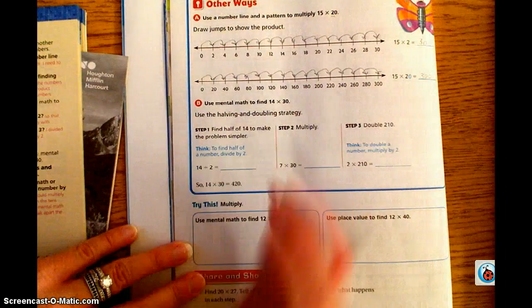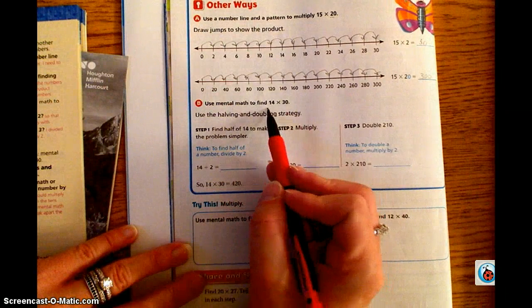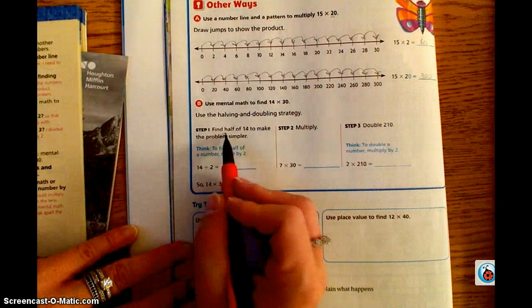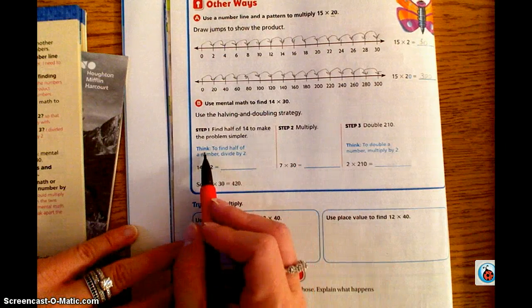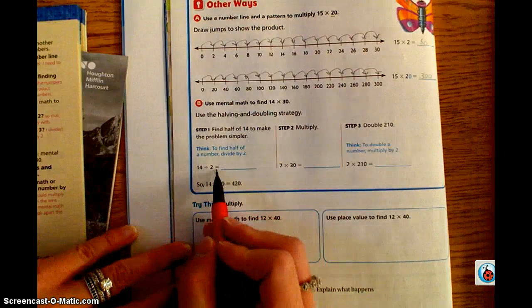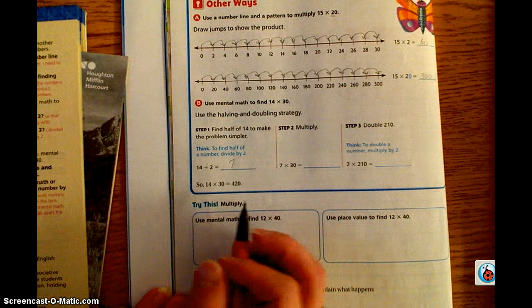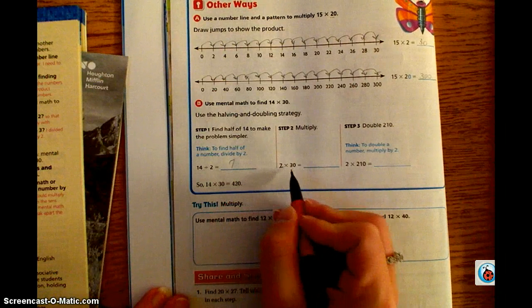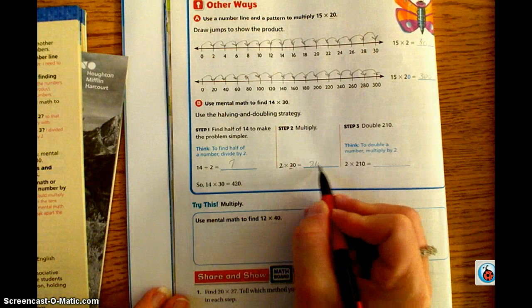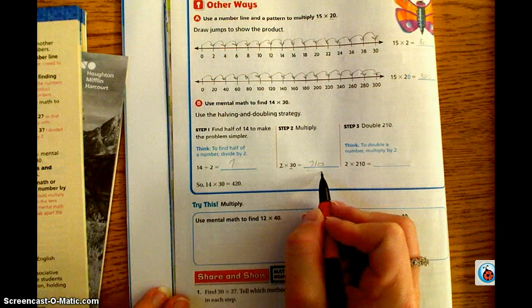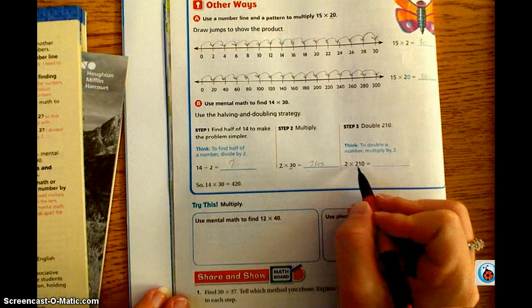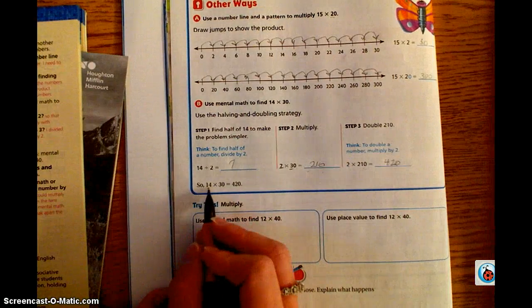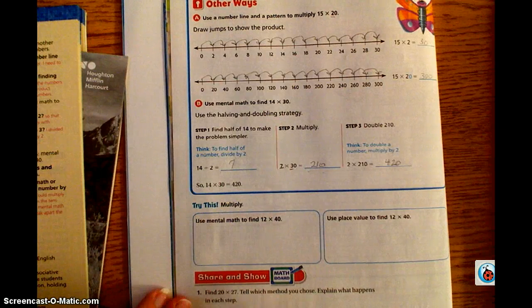The last strategy that they're giving us is use mental math to find 14 times 30. Use the halve and double strategy. Step one, find half of 14 to make the problem simpler. 14 divided by 2 we know is 7. Then we're going to multiply. We're going to take 7 times 30. 7 times 3 is 21, bring that 0, so it's 210. Then we're going to double it. So we're going to take 2 times 210, and we know that 2 times 210 is 420. So we know that 14 times 30 is 420.